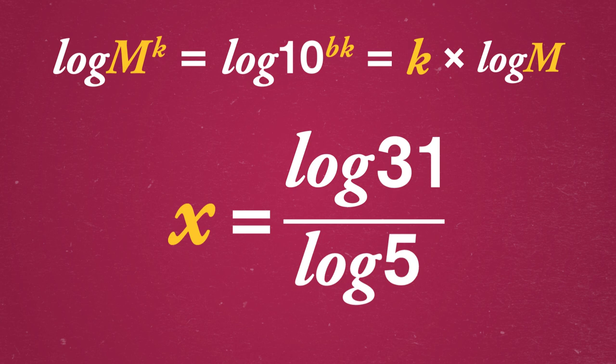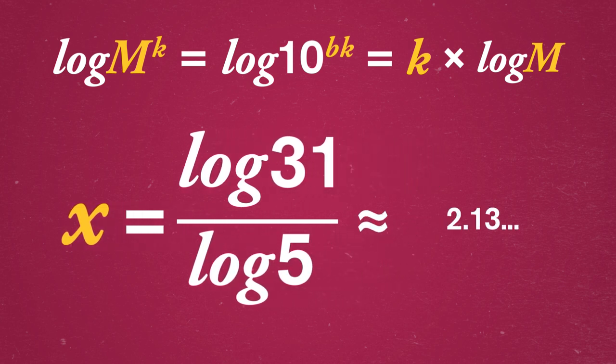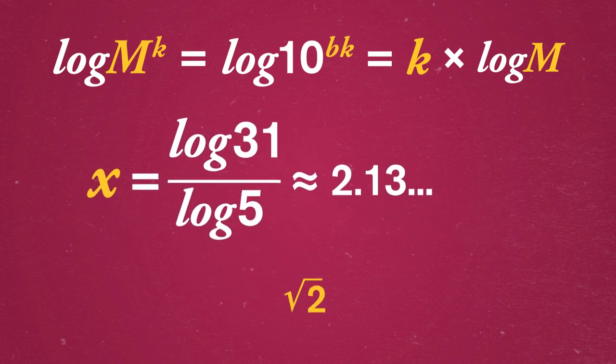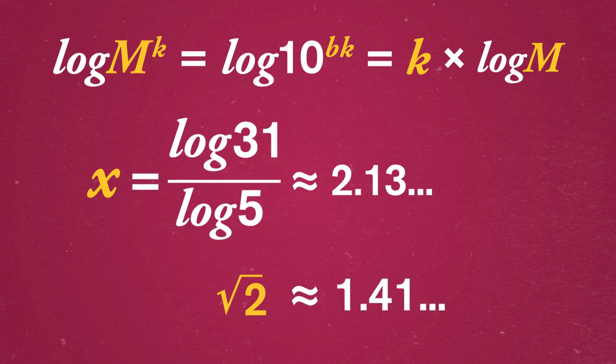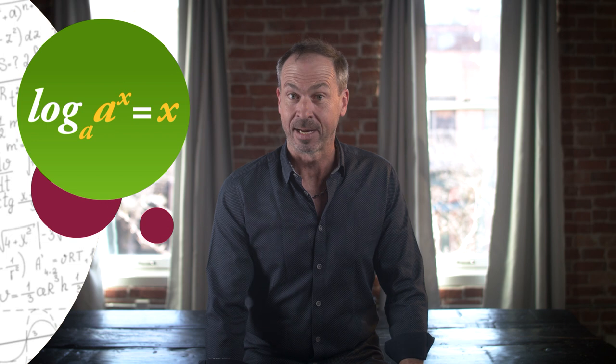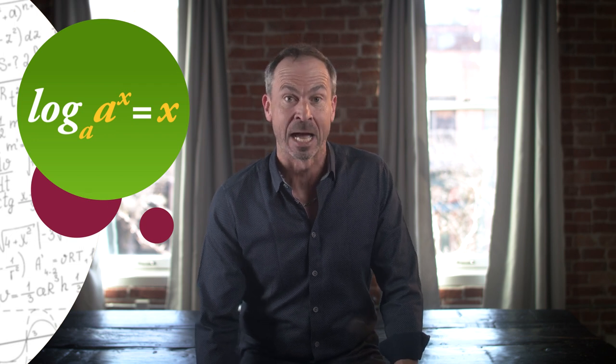Now, that looks pretty convoluted, but it is precise. By guessing and checking, you might get that x is about 2.13, but log of 31 over log of 5 is the exact form. The same way the square root of 2 is the exact form and 1.41 is an approximation. So, in general, we've just seen that log base a of a to the x is x, and we can use a logarithm to undo an exponent.